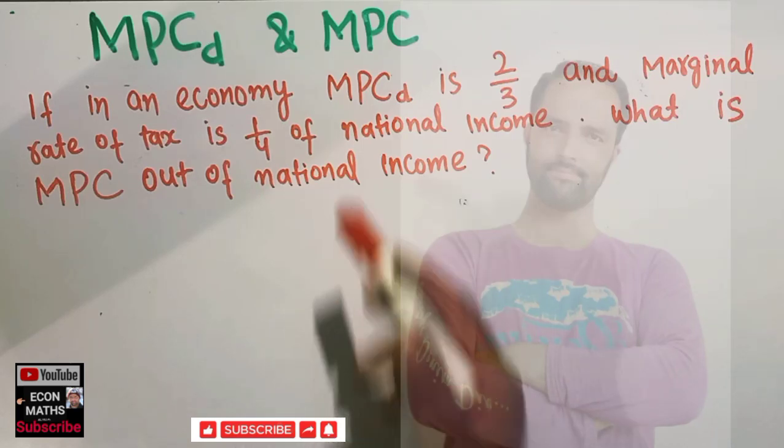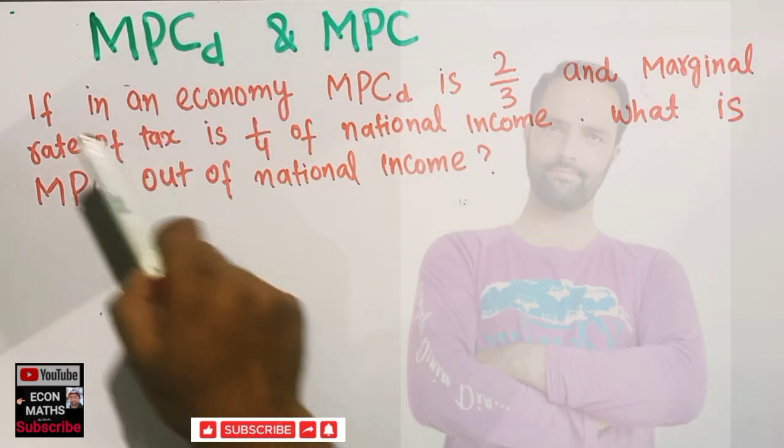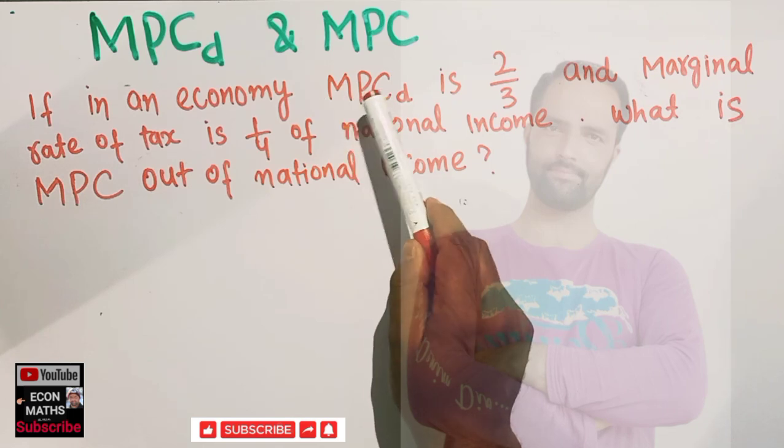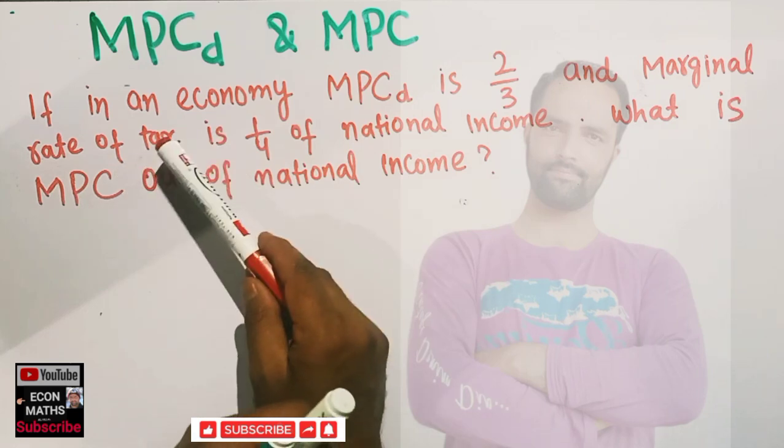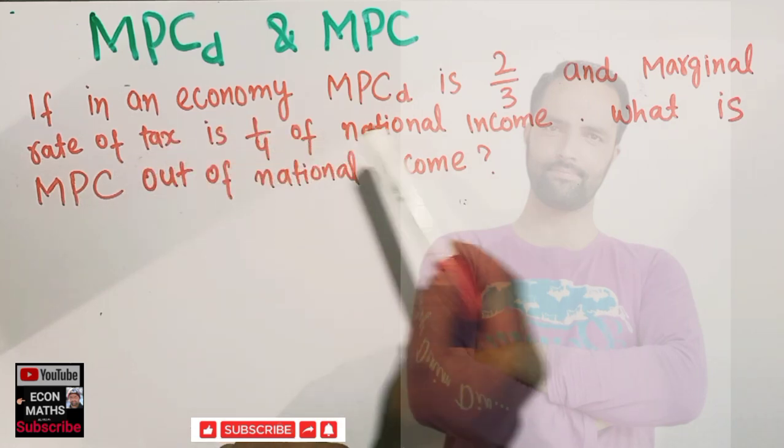Let us solve a question on MPCd and MPC. The question is: if in an economy, marginal propensity to consume out of disposable income is 2/3, and marginal rate of tax is 1/4 of the national income,